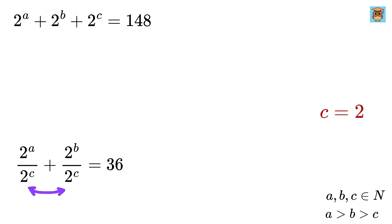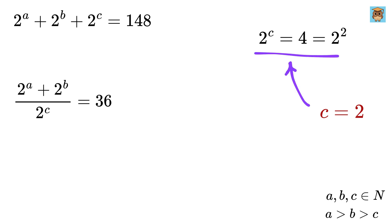Make the denominator common to get this, but we already know that 2 to the C is equal to 2 squared, as C equals 2, and therefore this will be 4. Take it here to get 2 to the A plus 2 to the B equals 36 times 4 or 144.